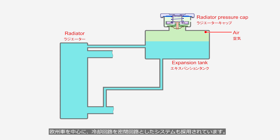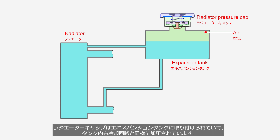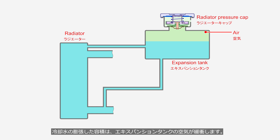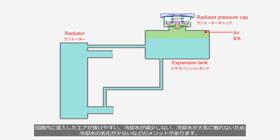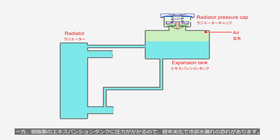Full-sealed cooling circuit systems are also adopted, primarily in European cars. The radiator pressure cap is attached on the expansion tank, and the inside of the tank is pressurized similarly to the cooling circuit. The expanded volume of the coolant is absorbed by the air in the expansion tank. There are advantages such as easy removal of trapped air, minimal loss of coolant, and reduced coolant degradation as it is not exposed to the atmosphere. On the other hand, because pressure is applied to the plastic expansion tank, there is a risk of coolant leakage due to deterioration over time.